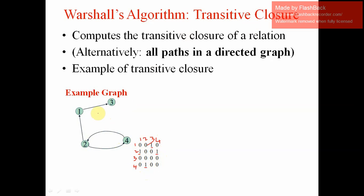Now we have to find the transitive closure for this graph using this matrix. For example, 2 to 1 is connected and 1 is connected to 3, so there is an indirect path from 2 to 3 via 1 — we change that entry to 1. Also, 2 to 4 is a direct path and 4 to 2 is a path, forming a loop, so 2 to 2 is indirectly connected — we change that 0 to 1.